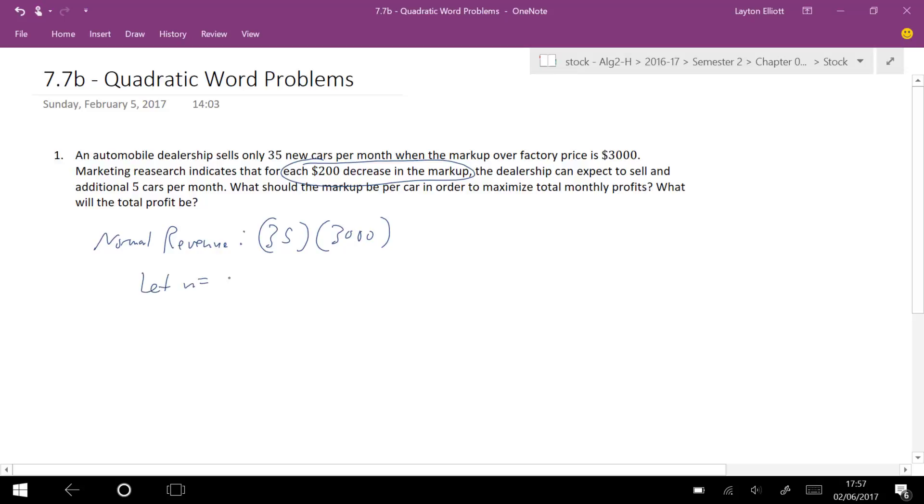But if I let N equal the number of $200 decreases, I'm not saying it's $200, I'm saying it's how many times you decrease that because you're decreasing it in $200 chunks. Then I can say that the revenue R(N) is equal to, when I decrease the markup by $200, I sell five more cars. So I start at 35 cars, but I add five cars times the number of decreases.